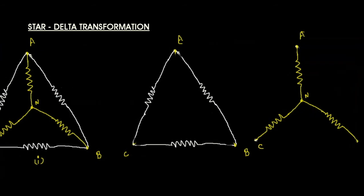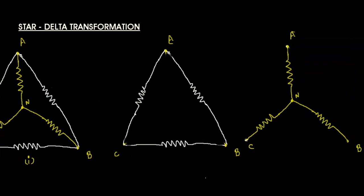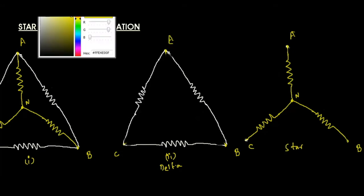When you split the combined image, the star and delta are separated. The star connection has a neutral point that is absent in the delta connection. We can see three nodes. The first is the delta connection and the second is the star connection. There are three nodes A, B, and C.